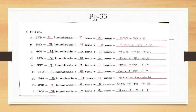Now look at Part D. The number is 873. Eight is at hundreds place, seven is at tens place, and three is at ones place. You will write: 8 hundreds + 7 tens + 3 ones. In expanded form: 800 + 70 + 3.